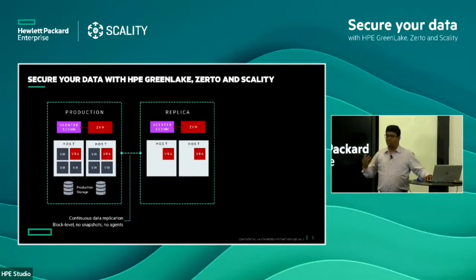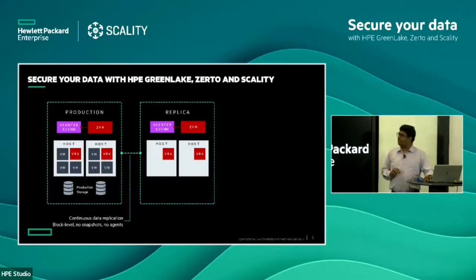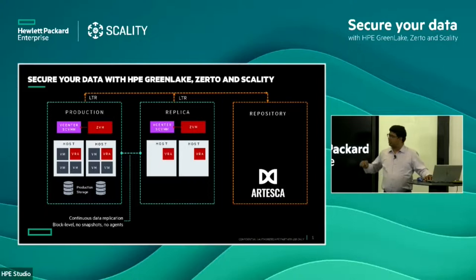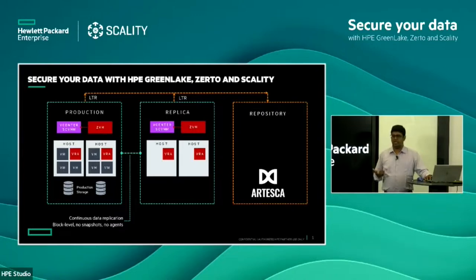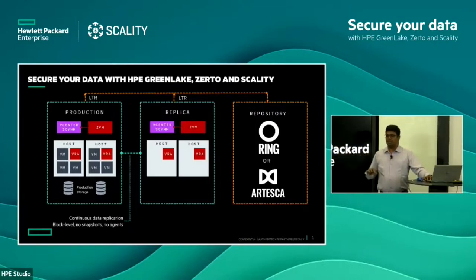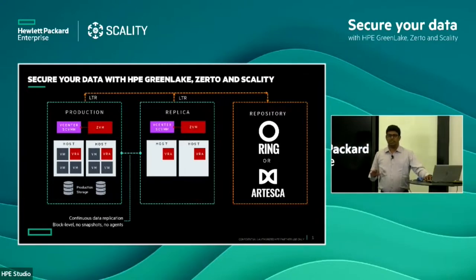If you want to secure your data for daily, weekly, monthly, and annual long-term retention purposes, we need a target repository. To configure the target repository for both production and replication sites, as Mr. Adam mentioned, we can start with Scality Artesca for a minimum 50 TB requirement, or Scality Ring for customers with more than 200 TB of data. This is subject to the customer's requirements. This joint solution using HP GreenLake, Zerto, and Scality provides data protection across the entire environment — whether workloads are on-premises, private cloud, public cloud, hybrid, or moving to serverless architecture.